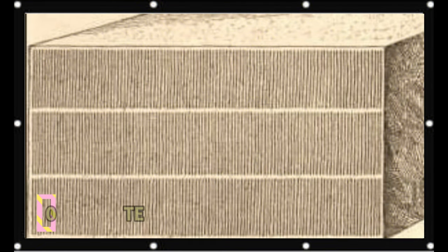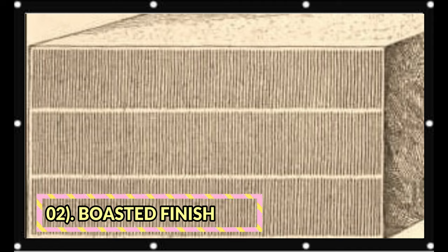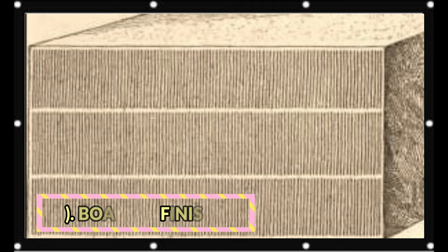Boasted finish of stones: Boasted finish is also called droved finish. This type of finish contains intermittent parallel lines which are horizontal, vertical, or inclined. This finish is obtained by a tool called a boaster, which has an edge width of about 60 mm.